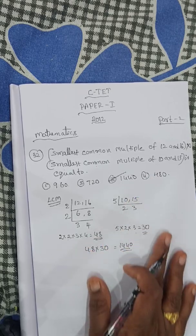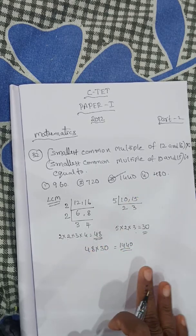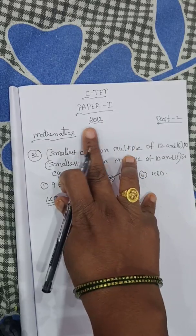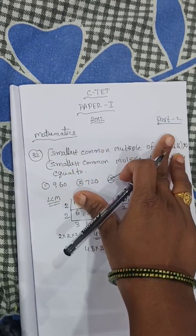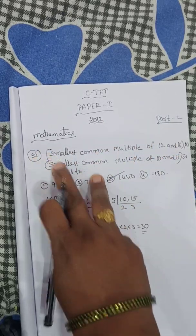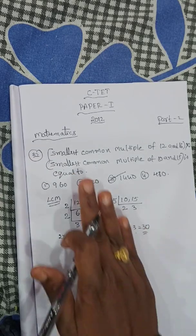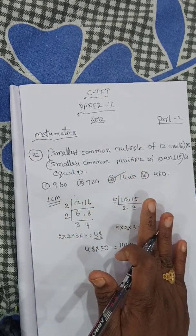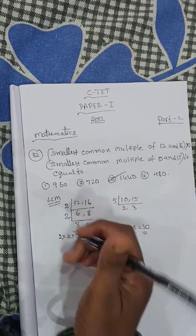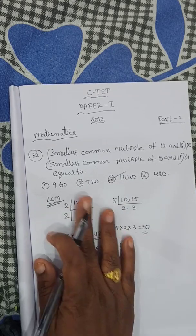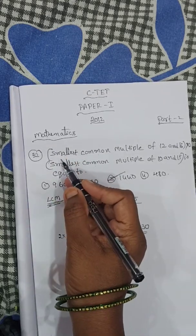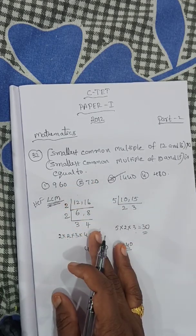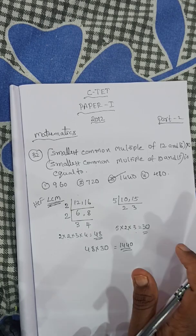Multiplication gives 1440 and the answer is option 3. This is sum 32 from CTEK Paper 1, 2012, Part 2. The sum asks for smallest common multiple — don't confuse this, it is the LCM. If it asks for the greatest, that would be the HCF. Okay, this is the answer.